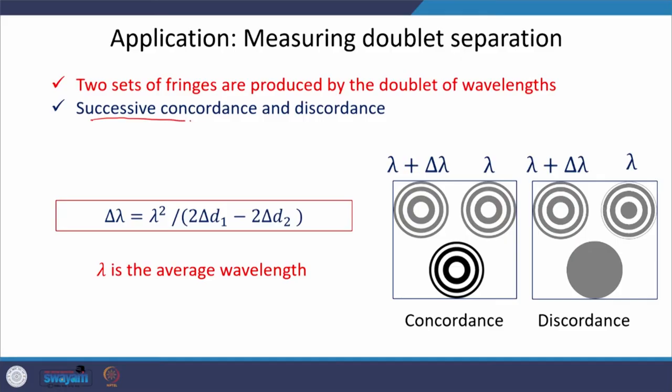This is done by observing successive concordances and discordances. Since there are two wavelengths, the first wavelength λ₁ produces its own concentric circular ring pattern, and the second wavelength produces its own concentric circular ring pattern. It may happen that the dark ring of one pattern falls on top of the dark ring of the other, and the bright ring of one falls on top of the bright ring of the other.